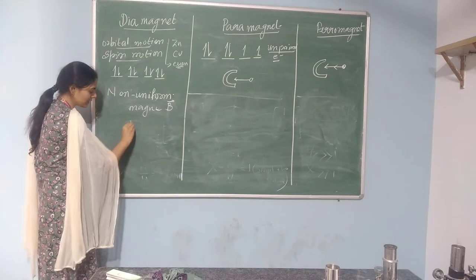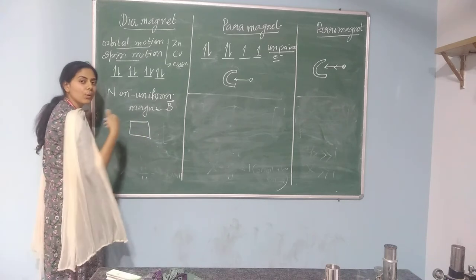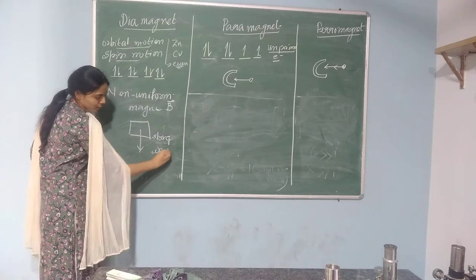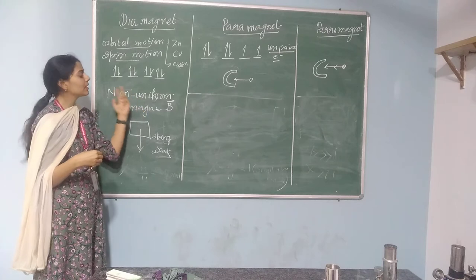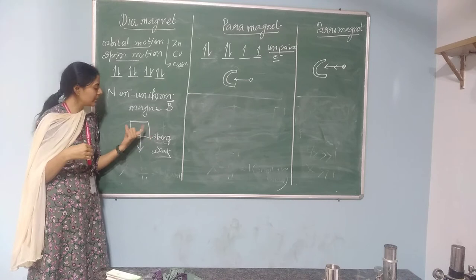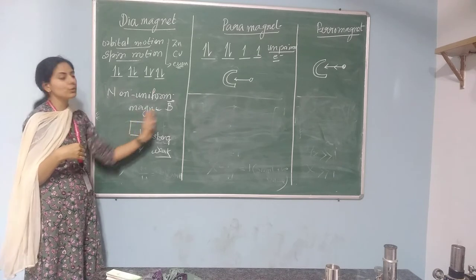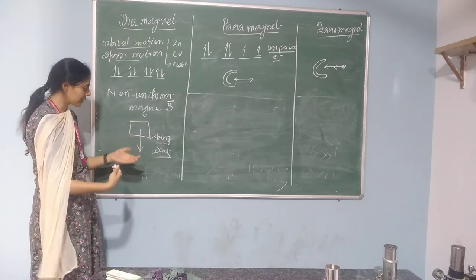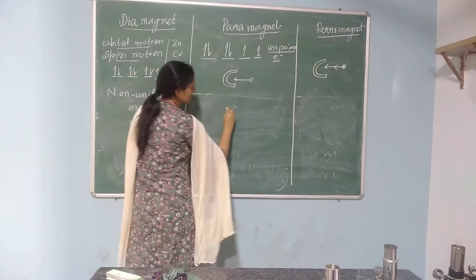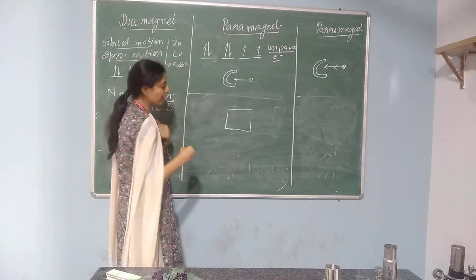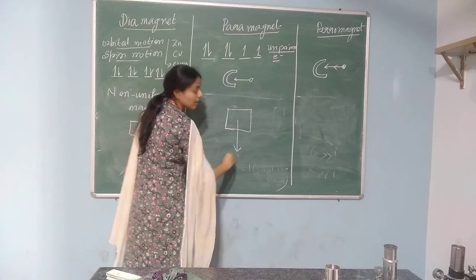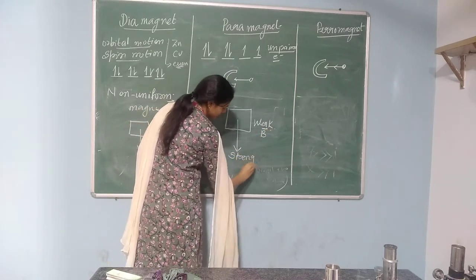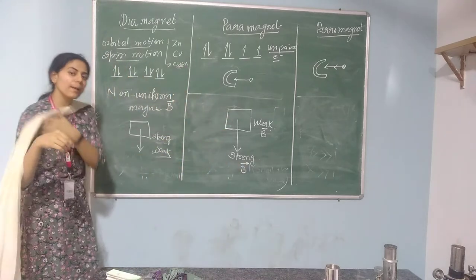In the case of diamagnetic material, it will always move from the strong magnetic field area towards the weak magnetic field area, because it is weakly repelled by the magnetic field. Any diamagnetic material kept under a non-uniform magnetic field will always go from a strong magnetic field to the weak magnetic field. In the case of a paramagnetic material, it always moves from the weak magnetic field towards the strong magnetic field.